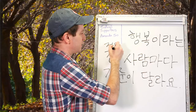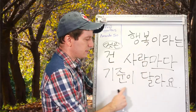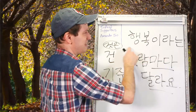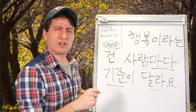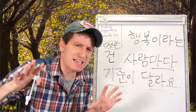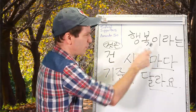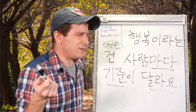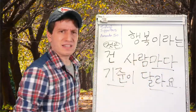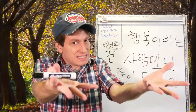행복이라는 건 사람마다 기준이 달라요. 건 is just 것은. 행복 means happiness. 사람마다 기준이 달라요 — each person's standards are different. So everyone's standards are different. But how do we translate 행복이라는 건 — 'this thing called happiness'? When it comes to this thing called happiness, everyone's standards are different. Why not just say 행복은 사람마다 기준이 달라요? Different nuance — and obviously everyone knows what 행복 is. So why would you use this form?